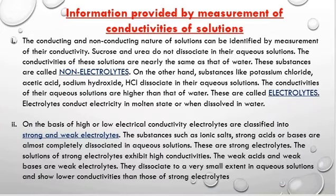What information is provided by the measurement of conductivities of a solution? The conducting and non-conducting nature of a solution can be identified by measuring conductivity. Substances like sucrose, urea, or alcohol do not dissociate into ions in aqueous solution, so their conductivities remain nearly the same as water — they are non-electrolytes. Whereas substances like KOH, KCl, NaOH, NaCl, and HCl dissociate into ions in aqueous solution, so their conductivities are higher than that of water — they are electrolytes.